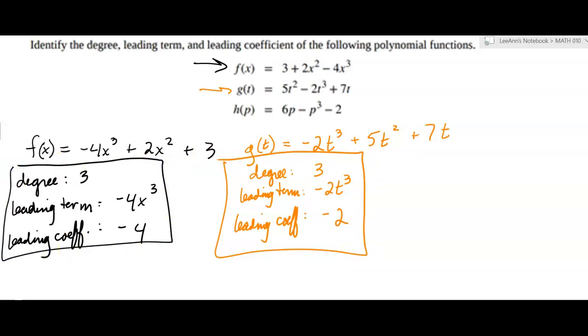Okay, so now the last one, h of p. I might have to go down here. h of p, is that one in the right order? No, negative p cubed plus 6p minus 2. Notice we're always putting the constant at the end, if there is one.